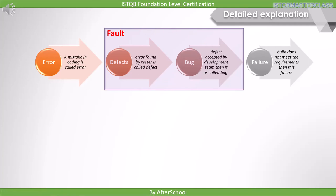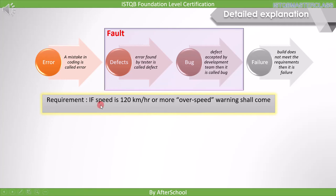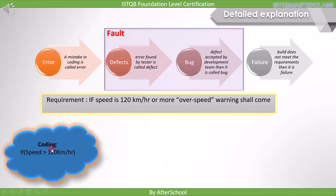Let's use an example to understand this better. Say this is a requirement: if speed is 120 km per hour or more, then an overspeed warning shall come. Now say this is code written by a developer: if speed is greater than 120 km per hour. If he finds the mistake here, then it is an error. The requirement says 120 km per hour or more, but the code says only greater than 120, so when speed equals exactly 120, the overspeed warning will not be shown. If he notices the mistake himself, then it is called an error.